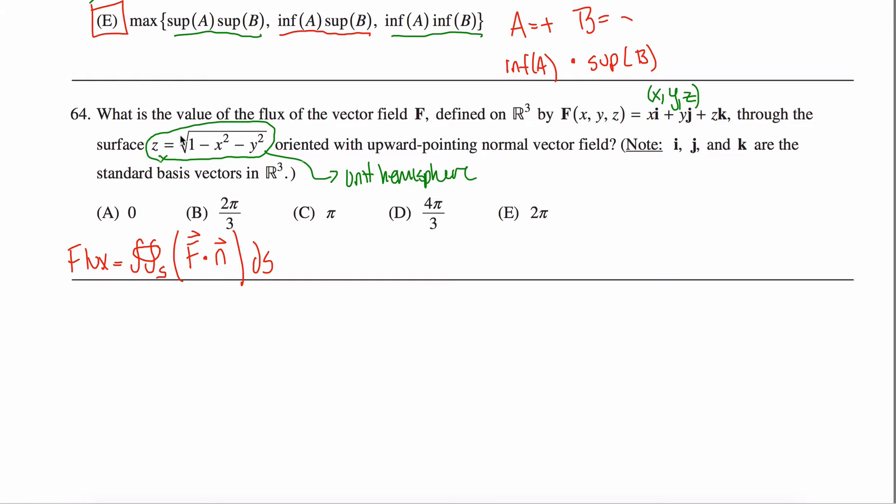But the square root here kind of screws things up. We don't have a plus or minus in here, so what that's saying is that the z coordinate is always non-negative. So we don't get the entire sphere, just the top half of the unit sphere because of this one right here. So we got a unit hemisphere going on right here.